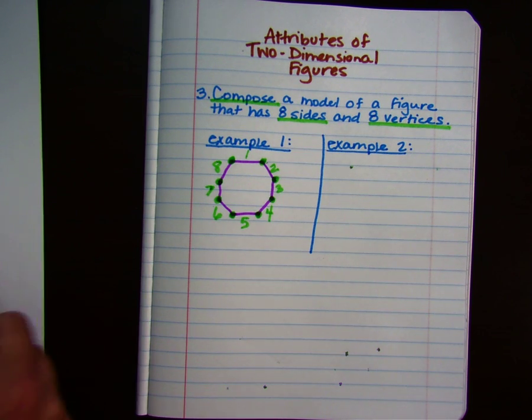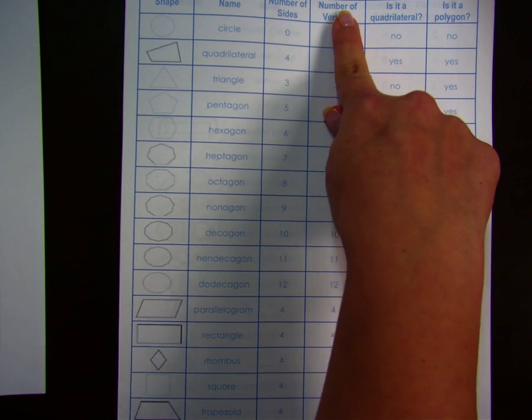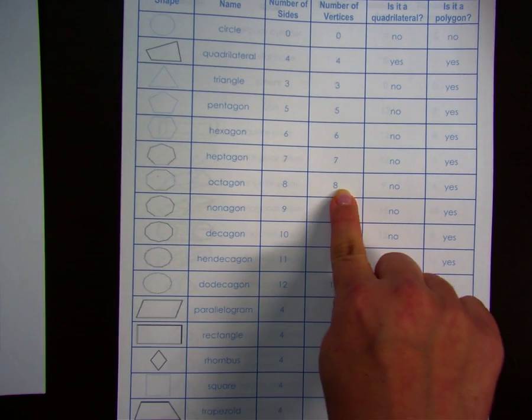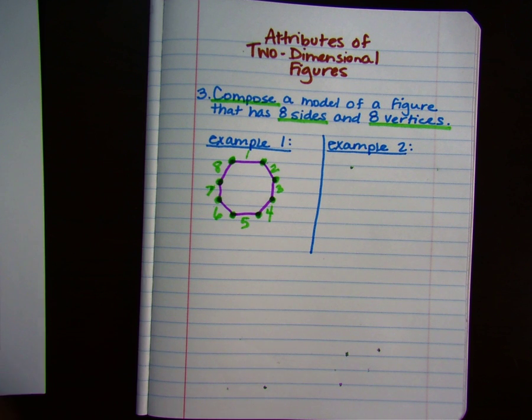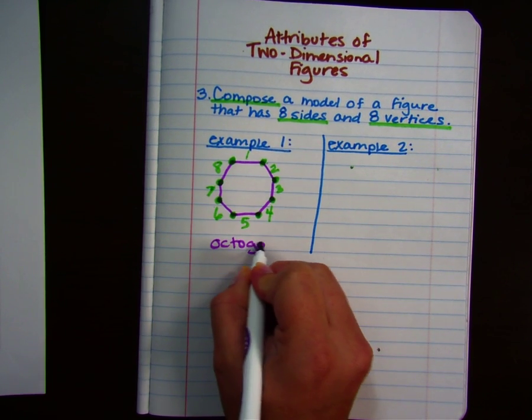If we look at our cheat sheet, a two-dimensional shape that has attributes that are eight sides and eight vertices is called an octagon. So this figure here is called an octagon.